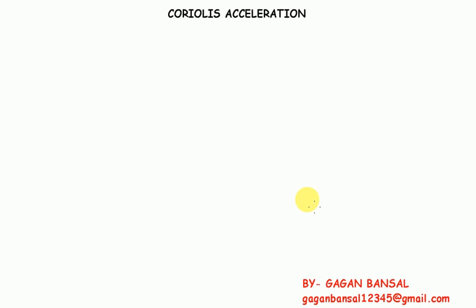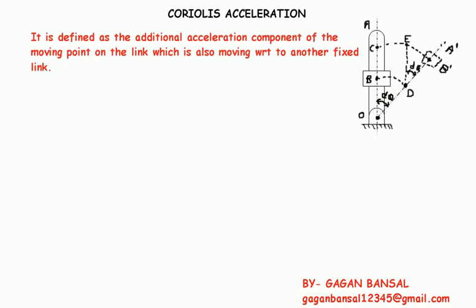Hello everyone. In this session we will be discussing Coriolis acceleration. Coriolis acceleration occurs when the distance between two points on a mechanism is not fixed. It is defined as the additional acceleration component of the moving point on a link which is also moving with respect to another fixed link, as in the case of a shaper mechanism where a slider moves inside the slotted lever.